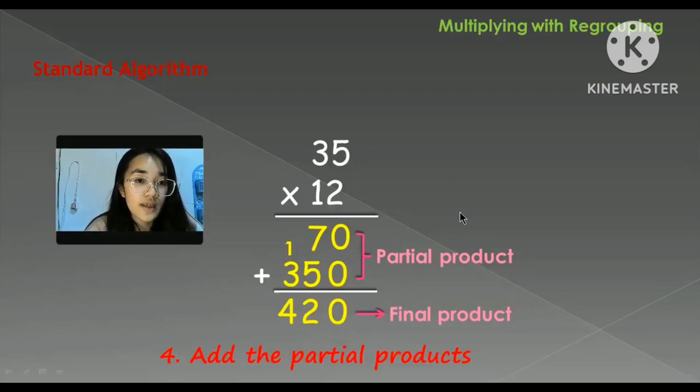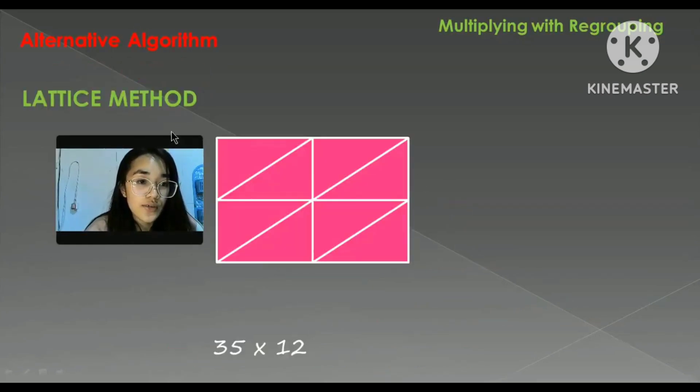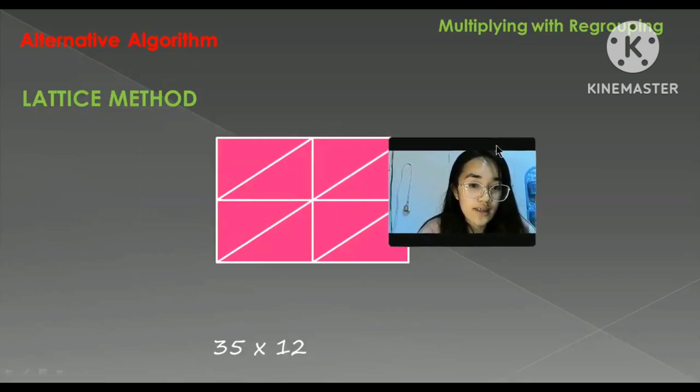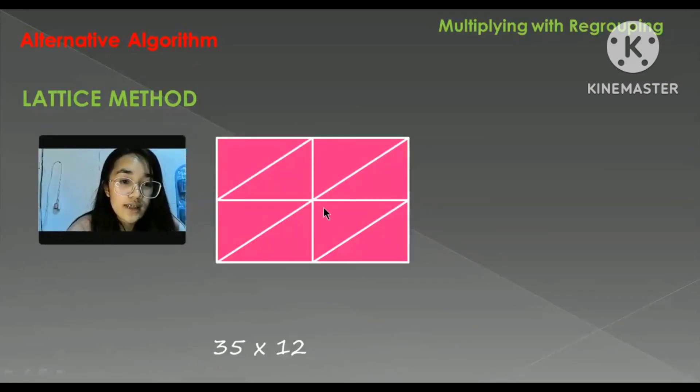Now I have some alternative and I'll be showing it to you. So first is by using the lattice method. So lattice method, we will make a square like this with diagonals inside. So 35, the multiplicand, we will write it here.